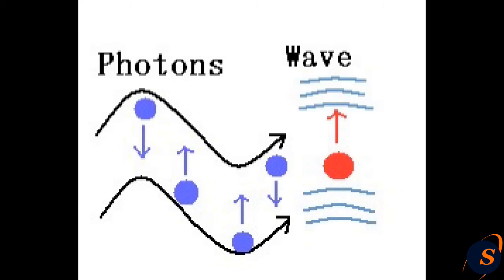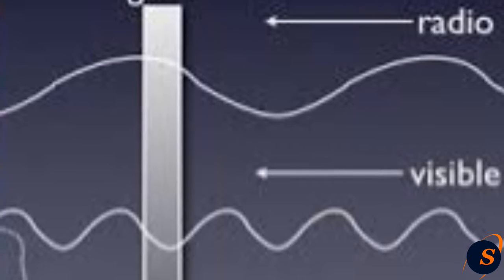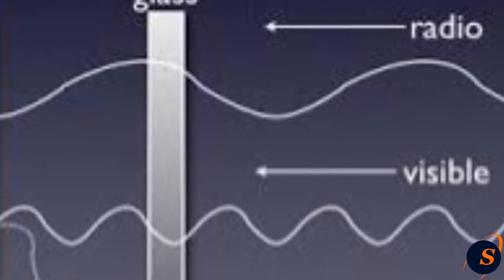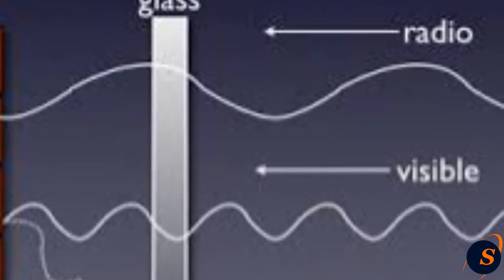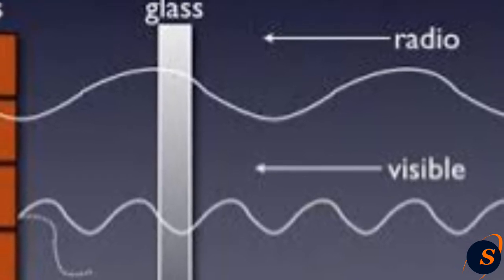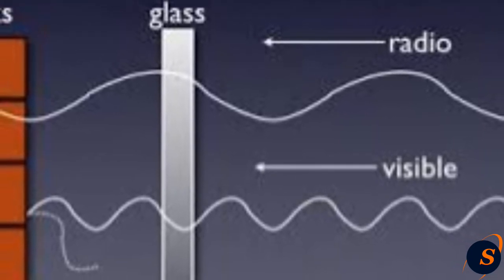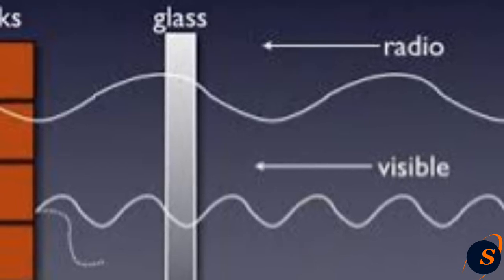Radio waves are bigger than the size of atoms in a wall. That is why they go through it. To understand how visible light can pass through some materials, we can think of atoms in that material containing electrons with different energy levels.